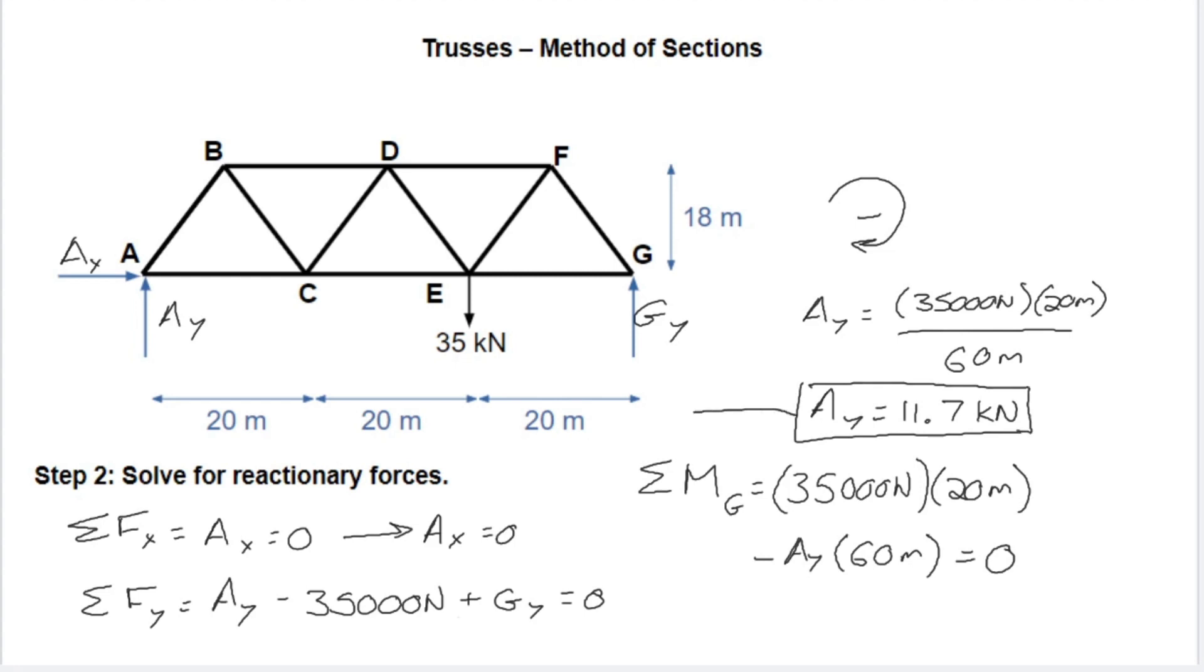And now we can take this, and we can go back to our sum of the forces in the Y, and we can substitute it in and just solve for GY. Again, pretty simple math. And we'll see that GY is around 23.3 kilonewtons. Now, we might not need both of these support reactions to solve this problem, but it's good to have these. And it's good to know how to solve all of our reactionary forces.